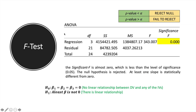In your ANOVA table, we have the F-statistic which was 343.007, and we have the significance F, which is technically the p-value for the F-statistic. If this p-value is less than alpha, we reject the null; if it is greater than alpha (0.05 in our case), we fail to reject. Looking at this value, it's almost zero. The significance F is almost zero, which is less than the level of significance of 0.05. Therefore, the null hypothesis is rejected. At least one slope is statistically different from zero, and therefore we can say our model is valid — at least we have a model.